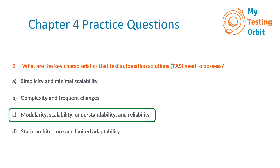Option A is incorrect because TAS typically needs to be scalable to accommodate various testing scenarios and environments. While simplicity is valuable for ease of use, it is not always directly associated with minimal scalability. Option B is also incorrect because complexity is not a desirable characteristic for TAS. TAS should ideally possess modularity and reliability. Option D is incorrect because static architecture and limited adaptability would limit the flexibility and effectiveness of TAS, which should be adaptable to changes in the system under test.